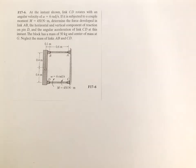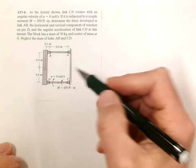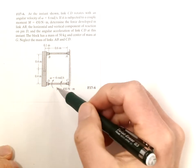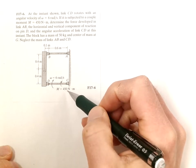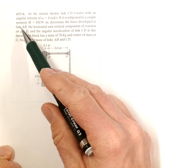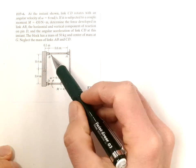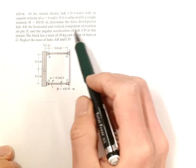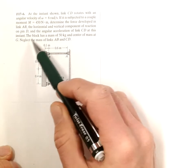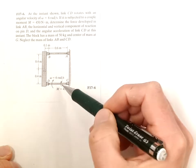At the instance shown, link CD with an angular velocity of 6 right here is subject to a couple moment also there of 450 newton meters. To determine the force developed in link AB and the horizontal vertical component at pin D and the angular acceleration of link CD.